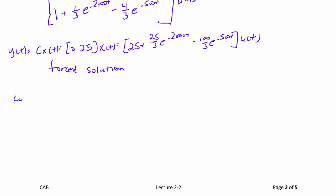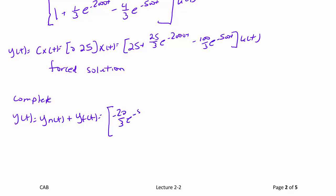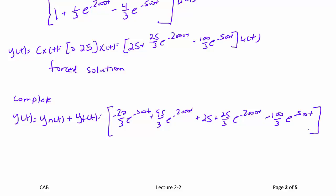The complete solution y(t) is the sum of the natural solution plus the forced solution: y(t) = [(-20/3)e^(-500t) + (95/3)e^(-2000t)] + [25 + (25/3)e^(-2000t) - (100/3)e^(-500t)]·u(t).